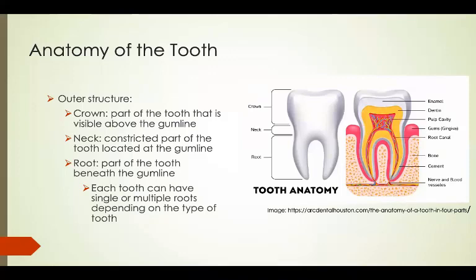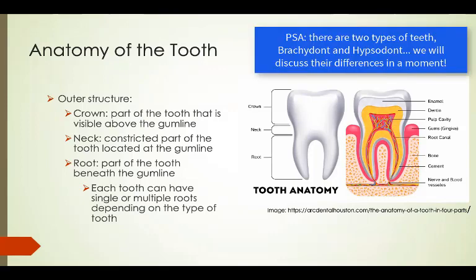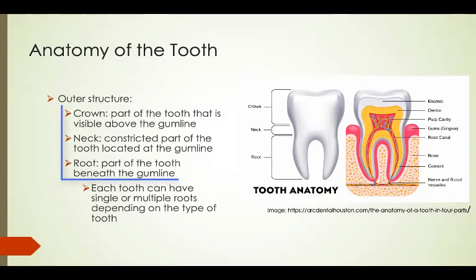Now let's dive into the anatomical structures of a tooth. Note that there are two types of teeth: brachydont and hypsodont. We will look at their differences in a moment, but for simplicity we will look at the structure of a brachydont tooth.